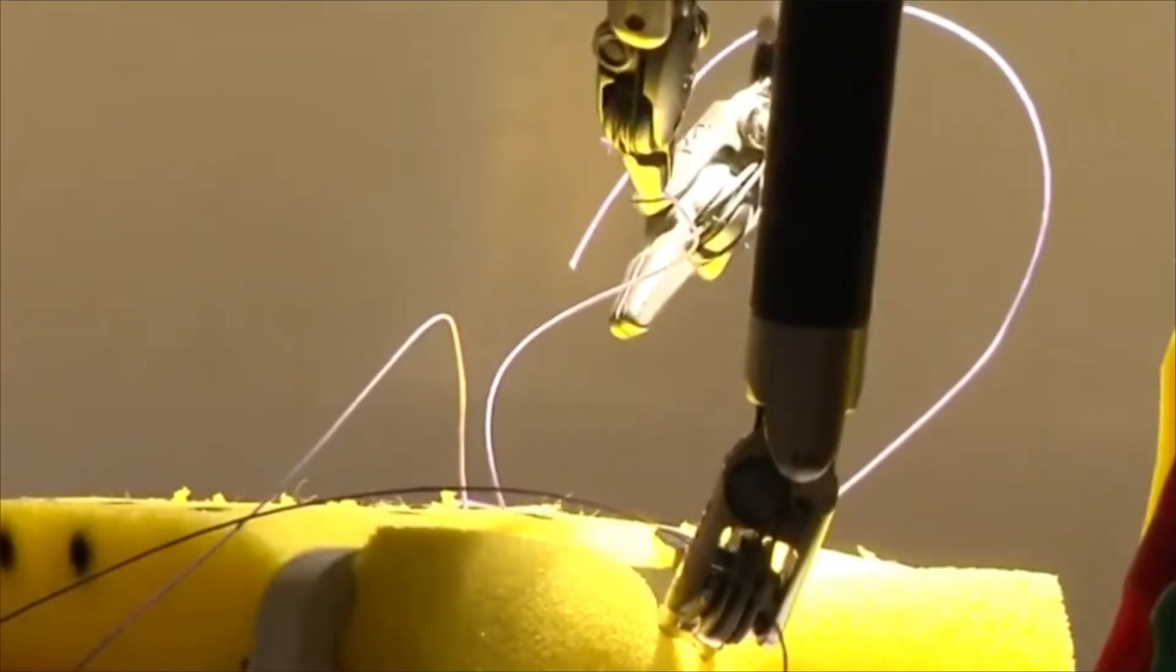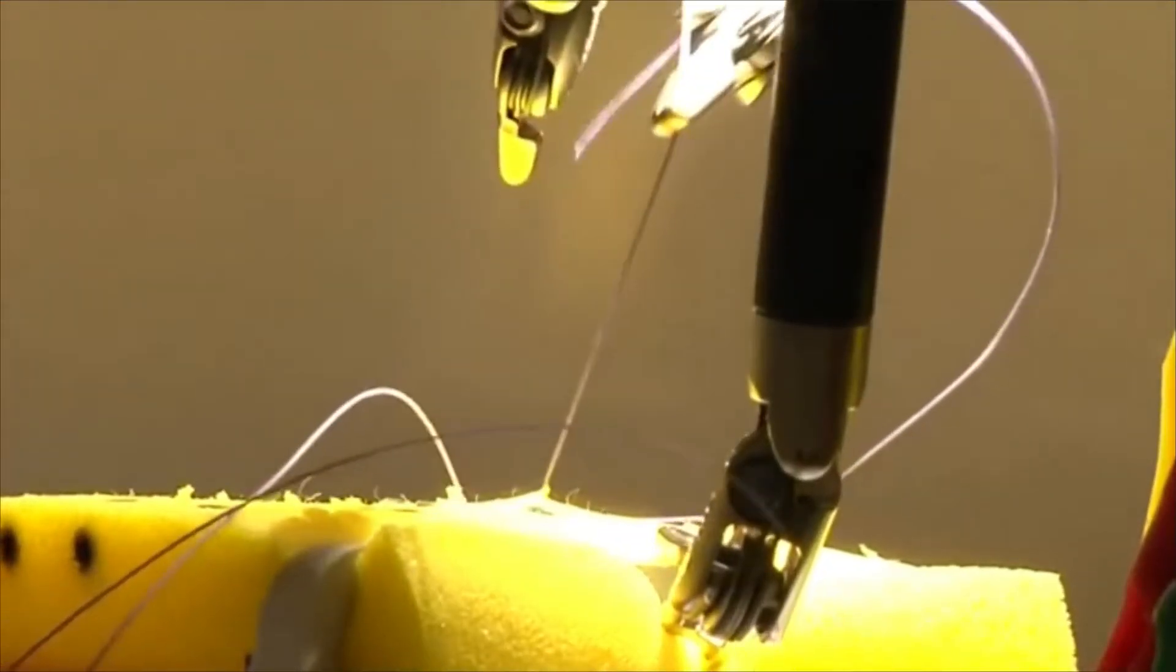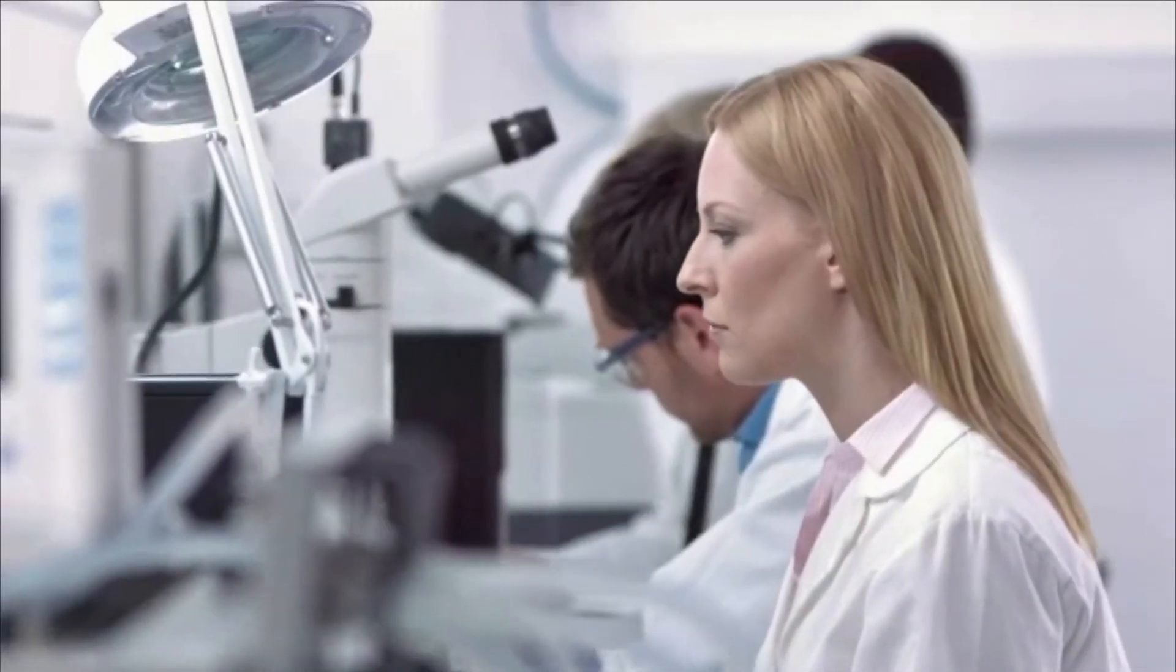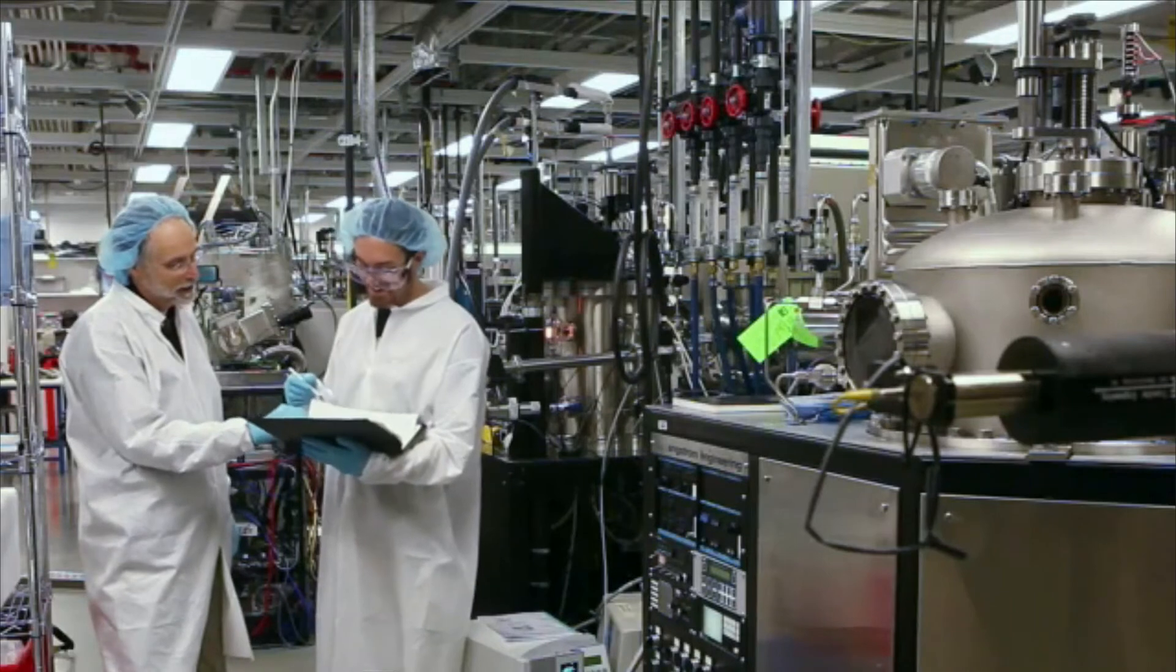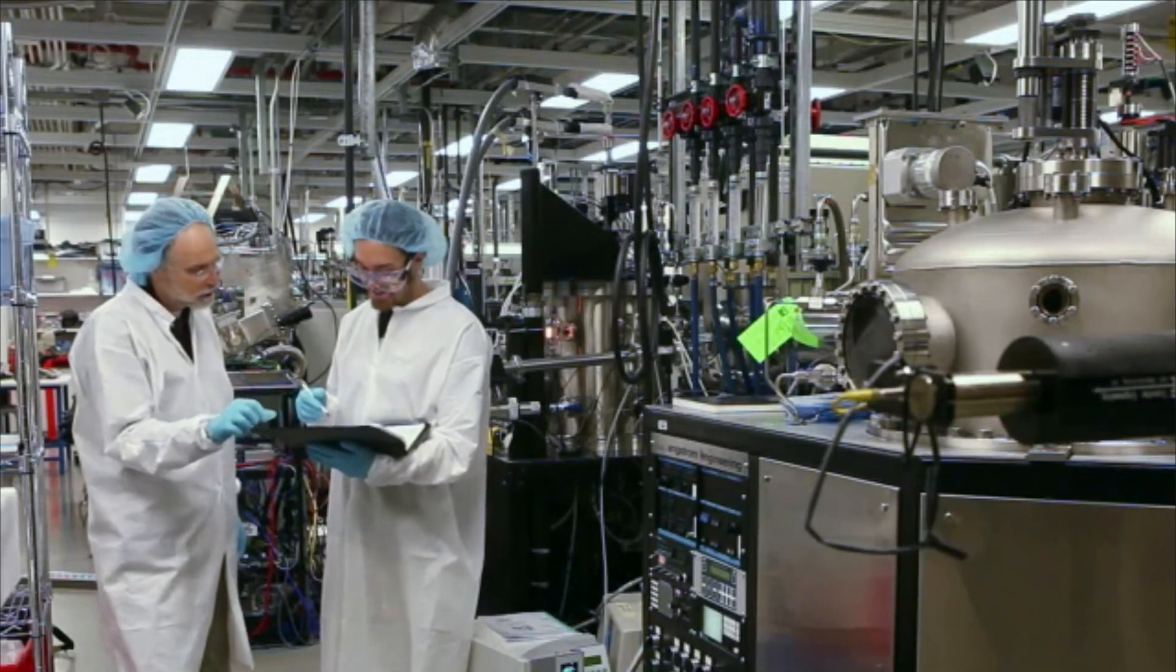Materials scientists may also major in chemistry or physics and may need a master's degree or Ph.D. and significant work experience to qualify for some jobs. A graduate degree allows an engineer to work as a college-level teacher or to do research and development.